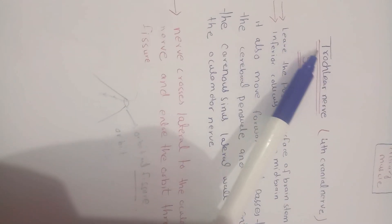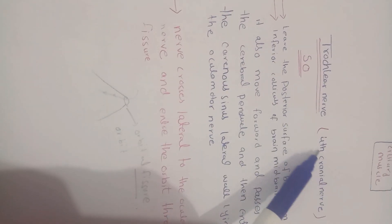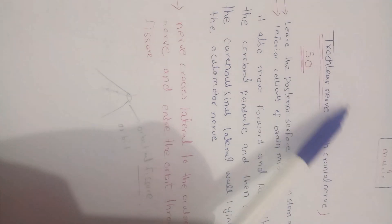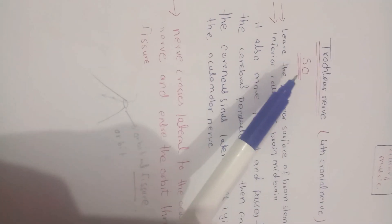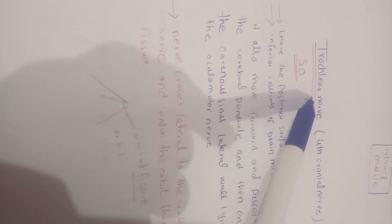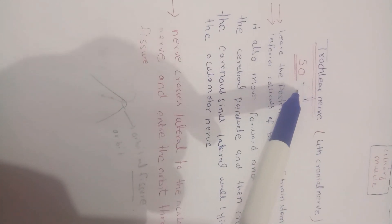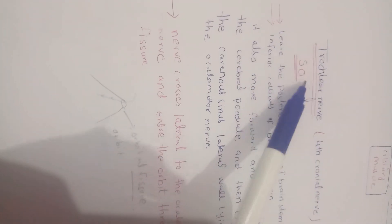Today I'm going to discuss the trochlear nerve, also called the fourth cranial nerve, which supplies the superior oblique muscles of the eyeball.